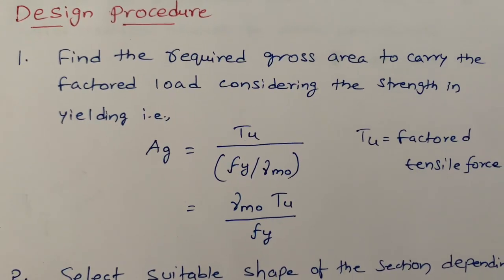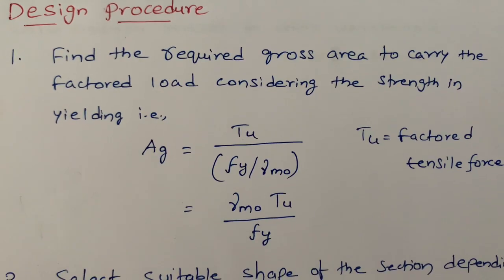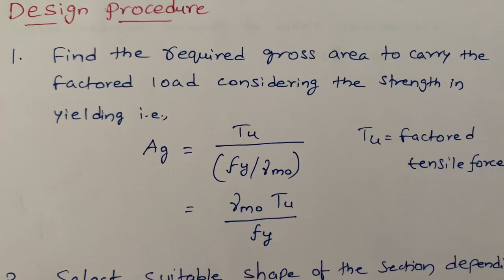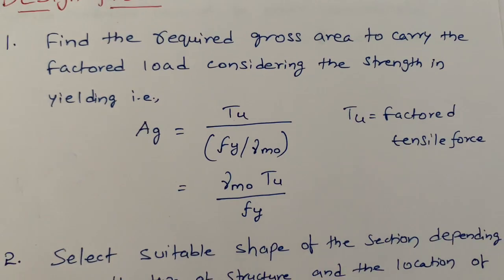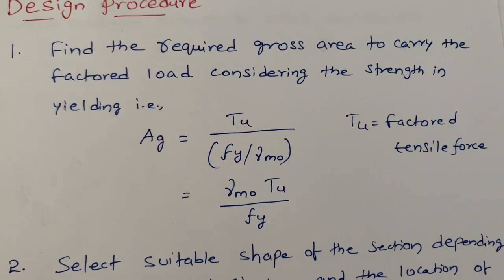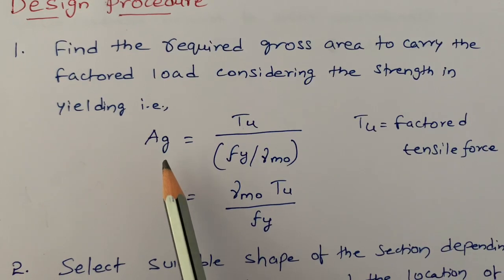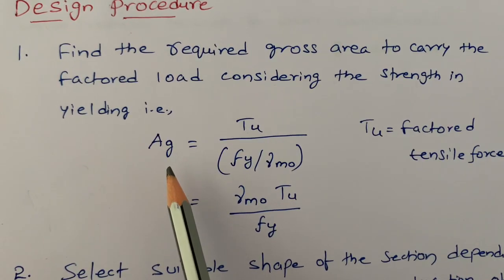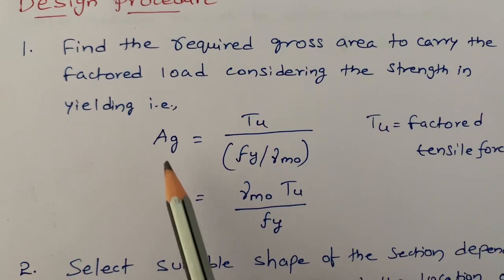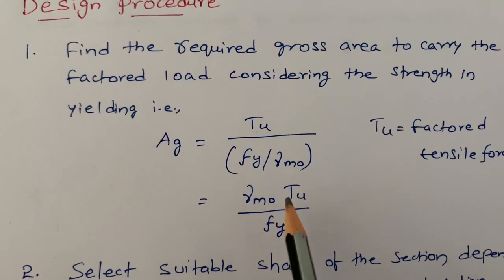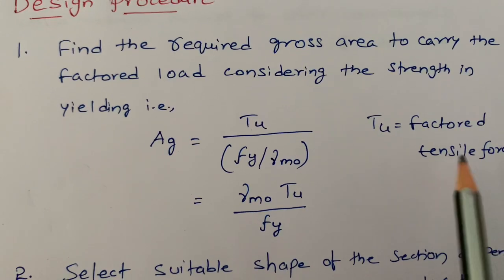The first step is to find the required gross area to carry the factored load, considering the strength in yielding. Before designing the tension member, we first need to calculate the gross area of that member using the formula: A_z = γm0 × Tu / Fy, where Tu is the factored tensile force.